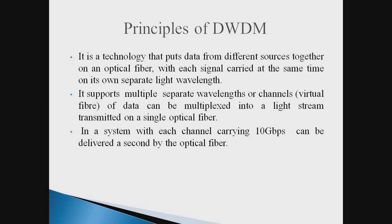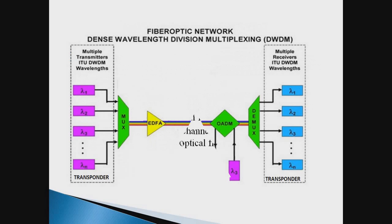This is the block diagram used in the DWDM optical network. Here you can see various input channels or wavelengths being multiplexed by the multiplexer, which are further amplified by the EDFA amplifier. An optical add-drop multiplexer is situated which is used to add or drop a certain frequency as required. After that, a demultiplexer provides the different outputs for the different channels.